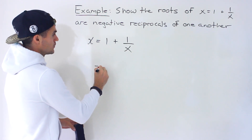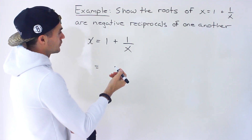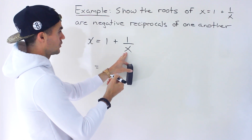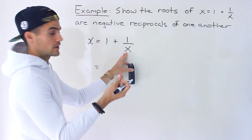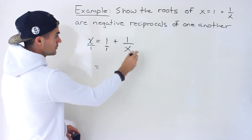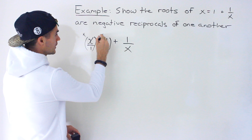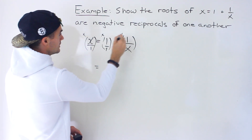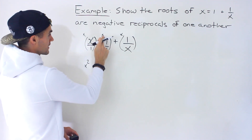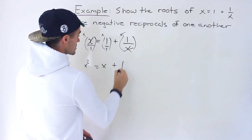How can we solve this? Well, a couple of different ways. First, I'd recommend getting rid of the fraction — more specifically, the denominator. Notice that x is over 1, the 1 is over 1. We can multiply everything by the lowest common denominator, which between 1, 1, and x is just x. So you'd end up with x times x equals x squared, x times 1 equals x, and the x's cancel, leaving just 1.